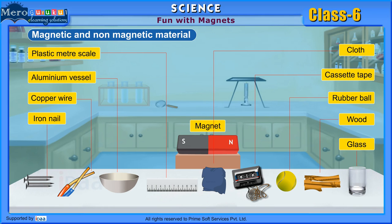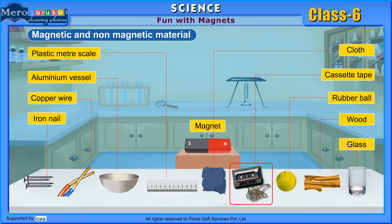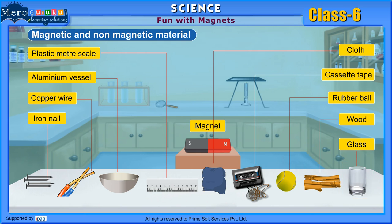Procure a small magnet. Collect various objects of day-to-day use from your surroundings such as an iron nail, a copper wire, an aluminium vessel, a plastic meter scale, a piece of cloth, a discarded cassette tape, a rubber ball, a small piece of wood, a glass, and a few more common objects. Bring the magnet near these objects one by one and observe which of the objects gets attracted by the magnet.